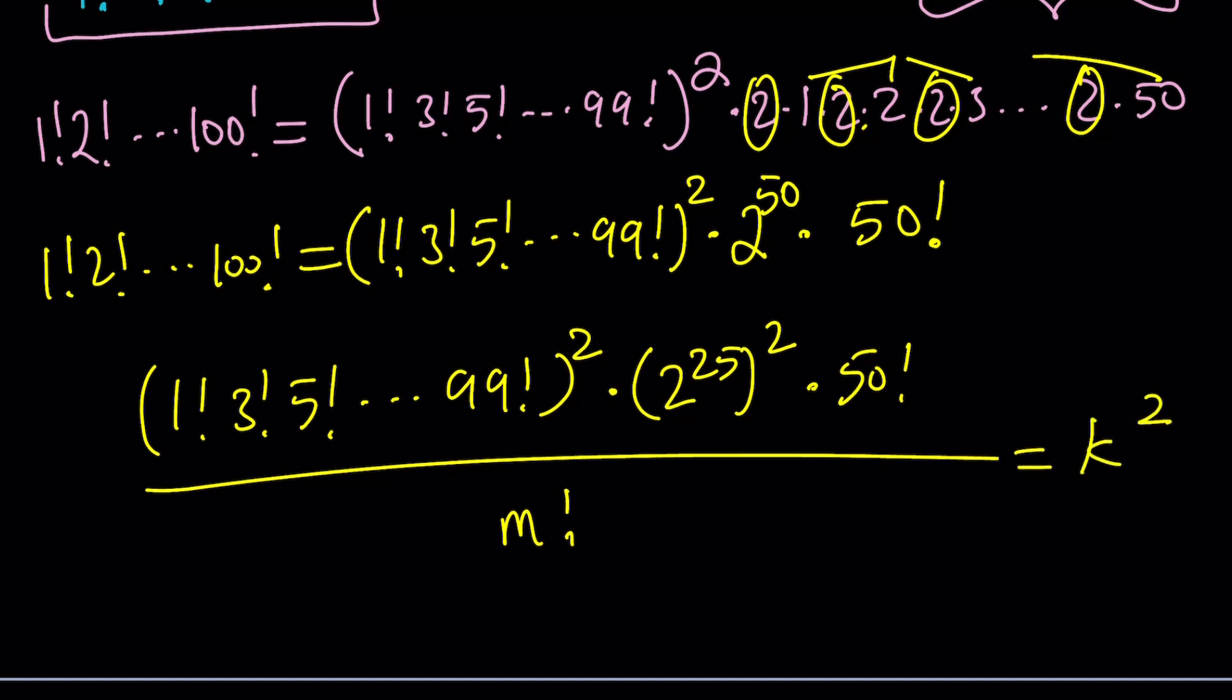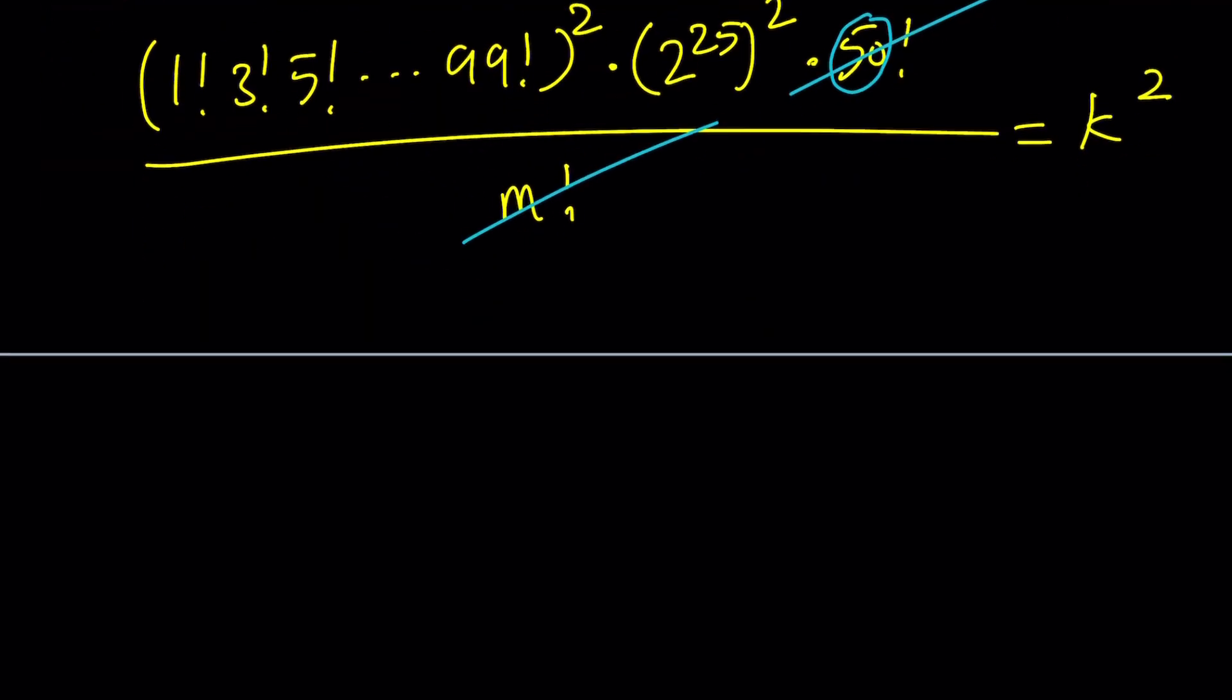If m is equal to 50, then 50 factorial cancels out, leaving us with a perfect square. Isn't that awesome? So, this implies that m is equal to 50, because we got 50 factorial equals m factorial, so that they can cancel out. And this just implies m equals 50. When large numbers are involved, of course, they're equal. So, m equals 50, and that also implies the k value.